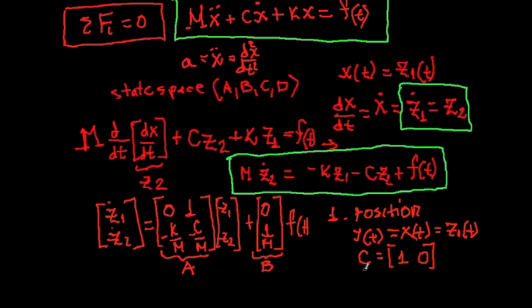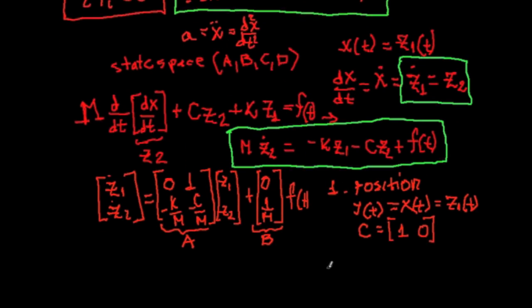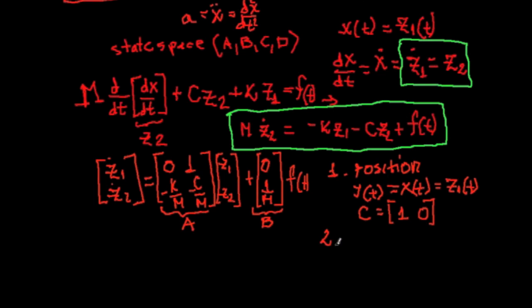In the second case, if the velocity x dot is the output of the system, y of t is x dot and this is equal z2, C matrix becomes 0, 1.